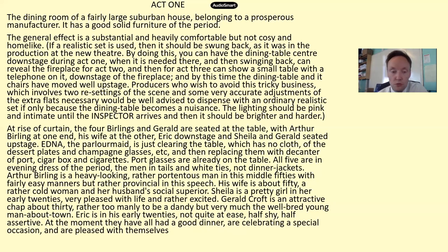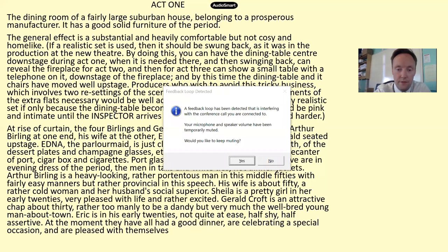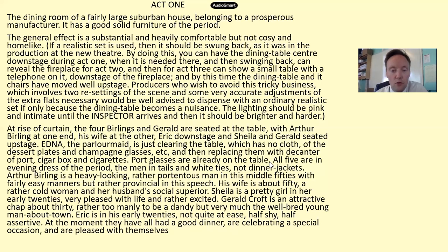Arthur Birling is a heavy-looking, rather portentous man in his middle 50s with fairly easy manners but rather provincial in his speech. His wife is about 50, a rather cold woman and her husband's social superior. Sheila is a pretty girl in her early 20s, very pleased with life and rather excited. Gerald Croft is an attractive chap about 30, rather too manly to be a dandy but very much the well-bred young man about town. Eric is in his early 20s — not quite at ease, half shy, half assertive.